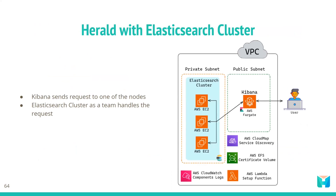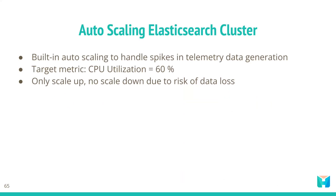Now in our updated architecture diagram the nodes are working together as a single unit. Kibana would send a request to one of the Elasticsearch nodes, and the Elasticsearch cluster — with its internal knowledge of node responsibilities and data distribution — will determine how to process and respond to that request. To further ensure that Herald is ready to deal with spikes in telemetry data generation, we have also built in auto-scaling for the Elasticsearch cluster. This cluster will scale up when the average CPU utilization for the cluster is 60% or above. To avoid data loss, this cluster only scales up and not down.